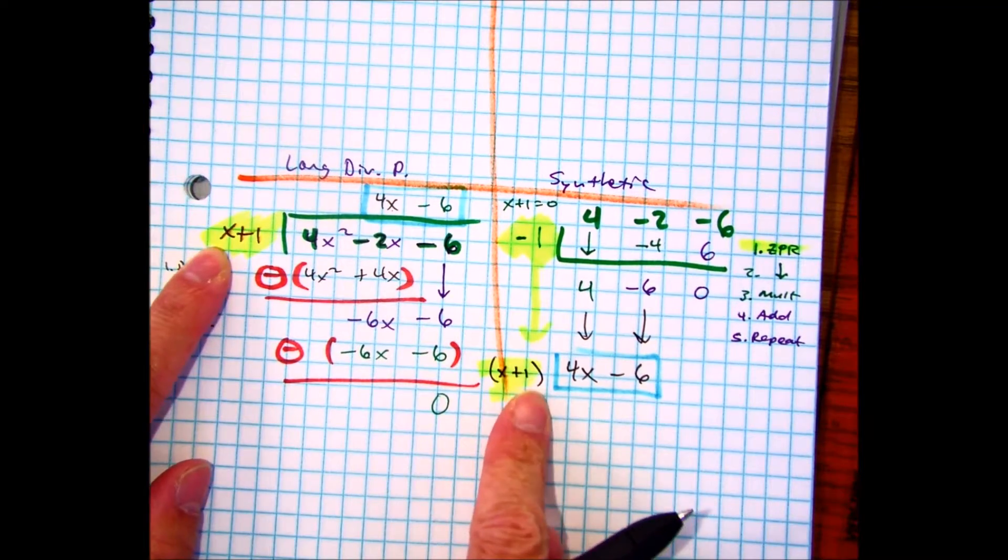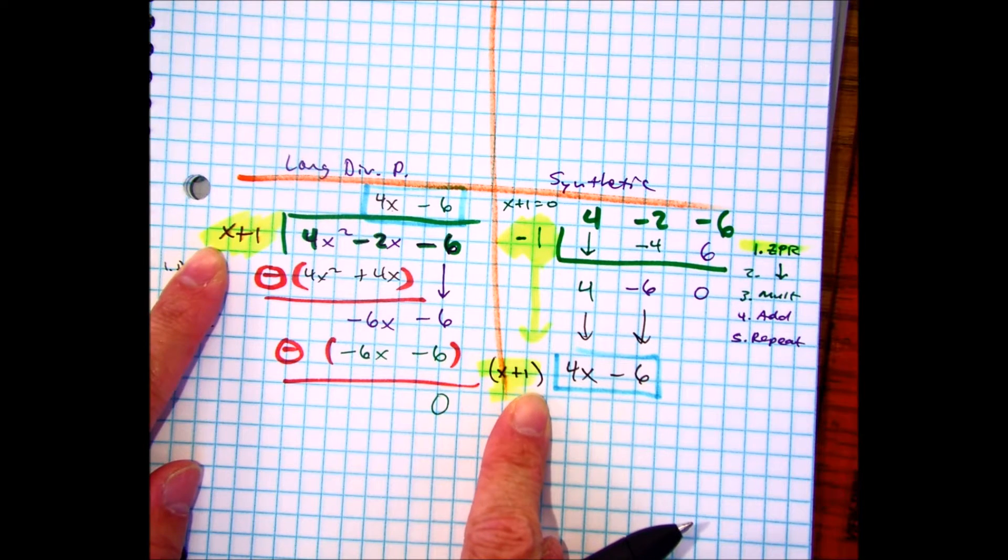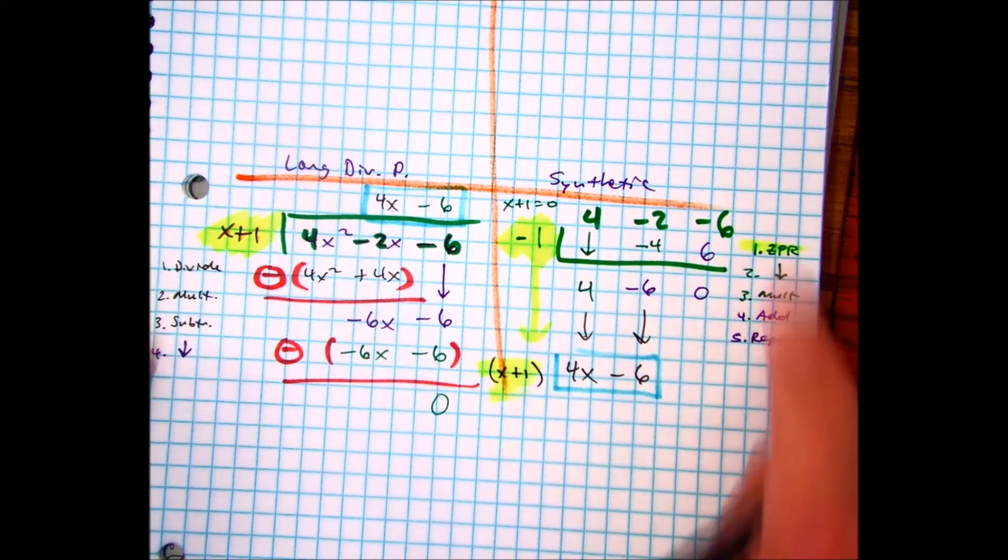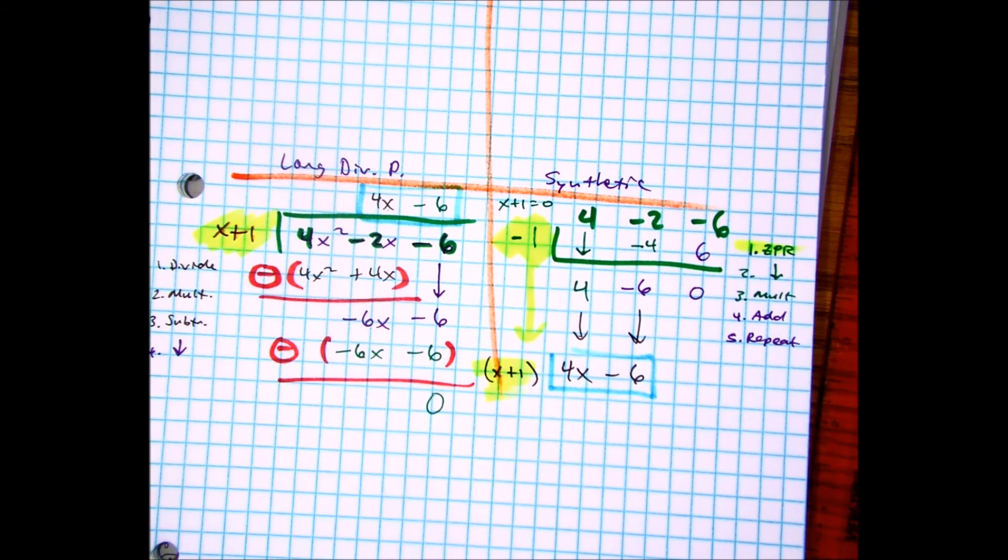So synthetic division just I think goes a lot faster. It is similar to long division. I'm not going to spend the time to show you exactly why these steps are not exactly the same, but I just wanted to show you how to see the connection.